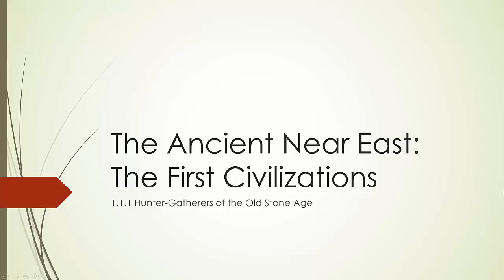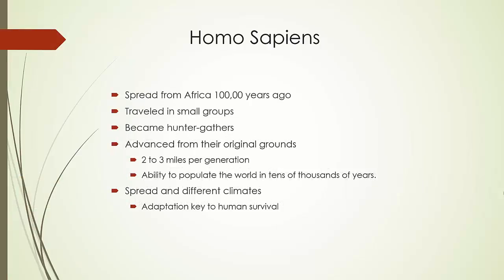This video will discuss the first humans of the Old Stone Age. We're going to start with Homo sapiens sapiens. It is said that they spread from Africa about 100,000 years ago, living and traveling in small groups. They became hunter-gatherers, as the knowledge of agriculture had not yet existed.